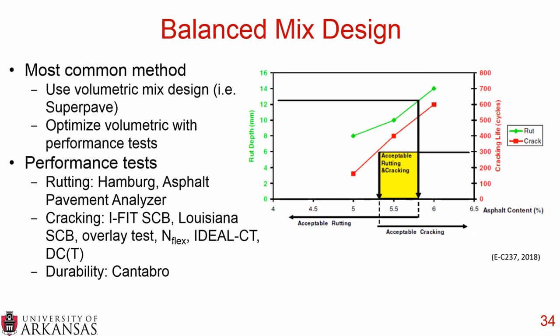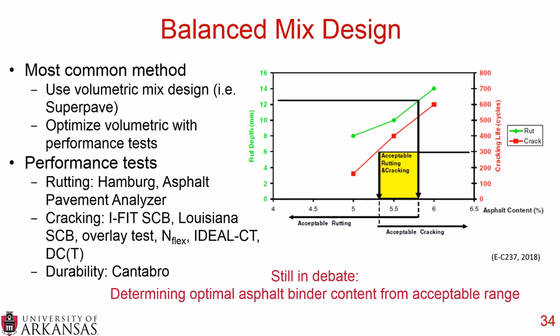Like any good new procedure, there are some issues still up for debate. With balanced mix design you get a range of asphalt binder content rather than a point, so how do you determine the optimal content from that range? That is still in debate. Also, how feasible is balanced mix design for use in quality control and quality assurance? It's great in theory — using performance tests to help determine asphalt binder content — but applying it to QC/QA is still being worked out. In my opinion, the balanced mix design is something we will be using more frequently moving forward.